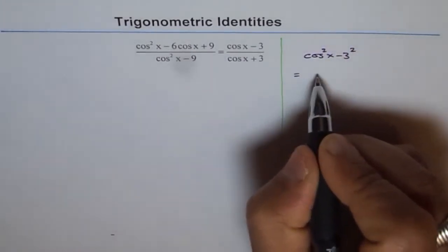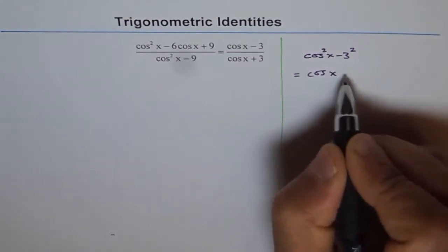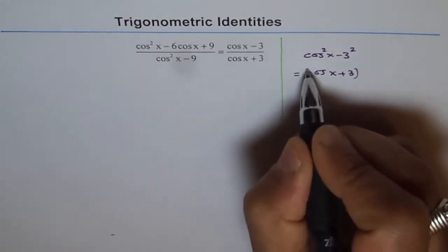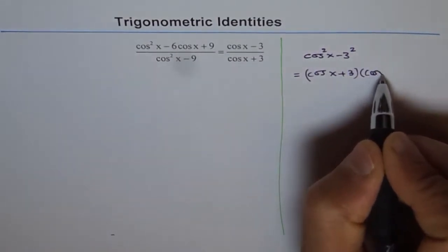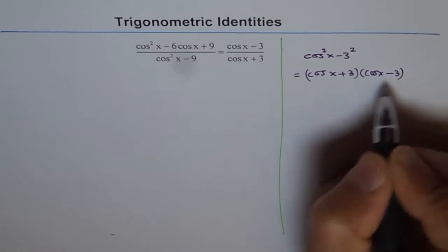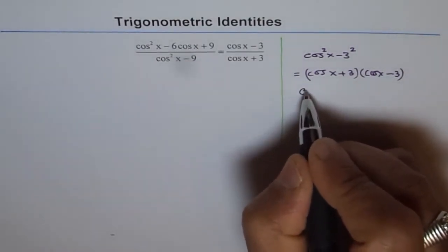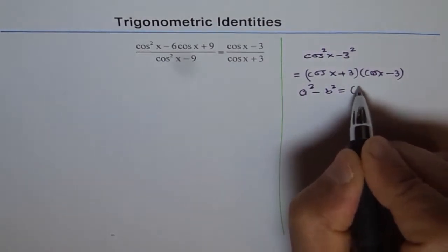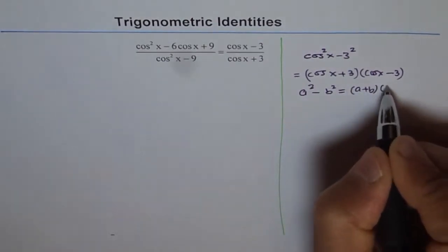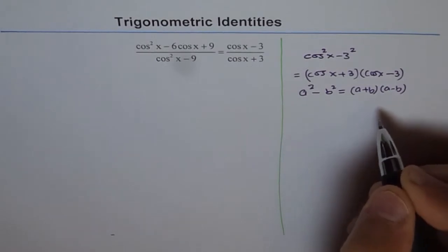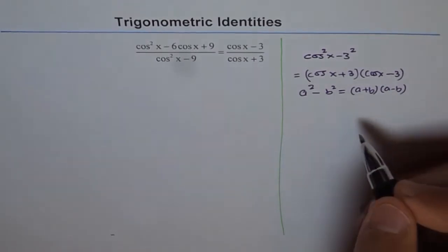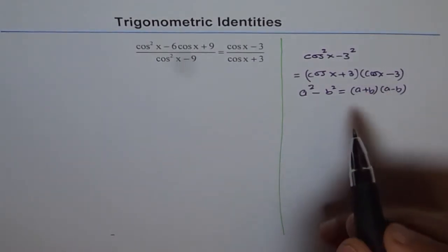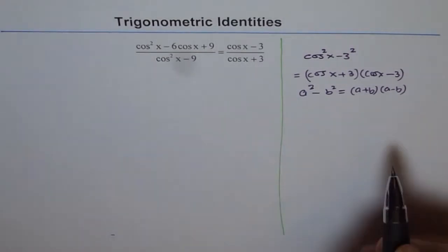So this could be written as cos x plus 3 times cos x minus 3. Difference of squares. So I am using this a square minus b square equals a plus b times a minus b identity to prove my identity. So this is what I am trying to see denominator as.